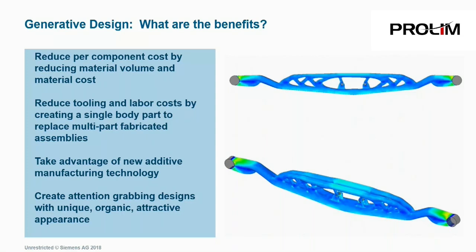Generative design offers significant potential benefits to manufacturers. First, it can reduce cost per part by reducing material used in components — important for high-volume parts but also impactful for batch production and one-offs. Second, it can reduce manufacturing costs: generative design produces a single solid mesh body that can replace a multi-component welded assembly, eliminating jigs, fixtures, welding materials, and skilled welders. These single-body parts can also be manufactured using additive manufacturing, removing the need for expensive tooling, and the organic designs help products stand out from the competition.